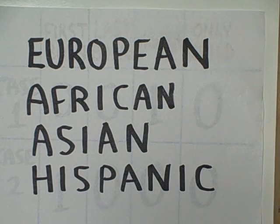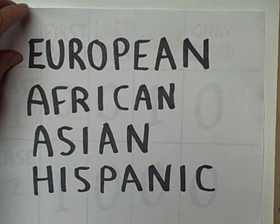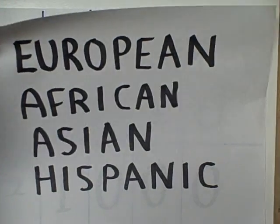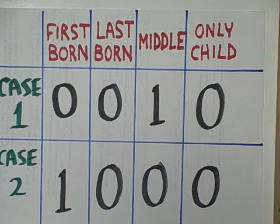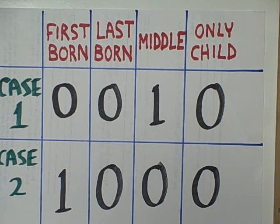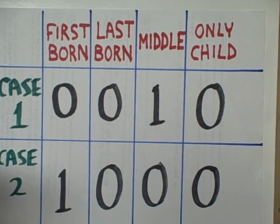An increasing number of people in this country identify themselves as having multiple ethnicities, such as golfer Tiger Woods. So let's suppose that we are dealing with a variable in an originally multiple nominal scale, such as birth order. Let's see how that would be entered into our spreadsheet. Here we would create four columns, one for each category.